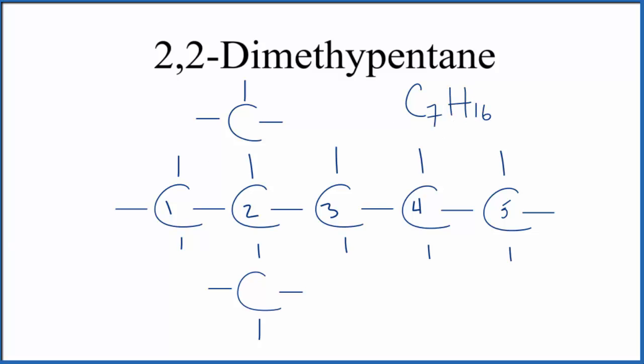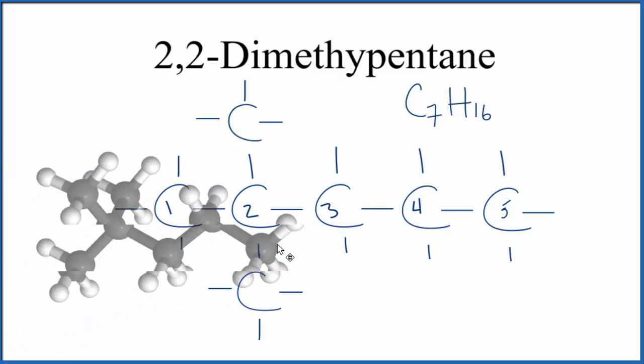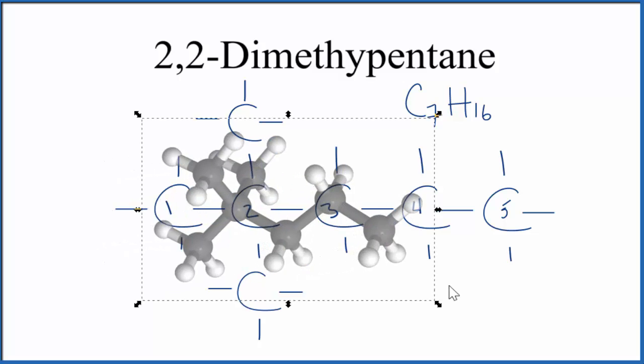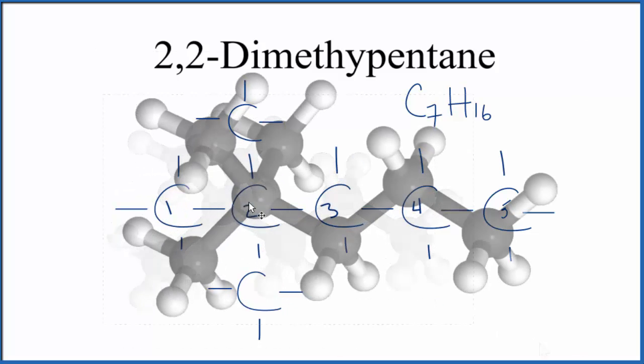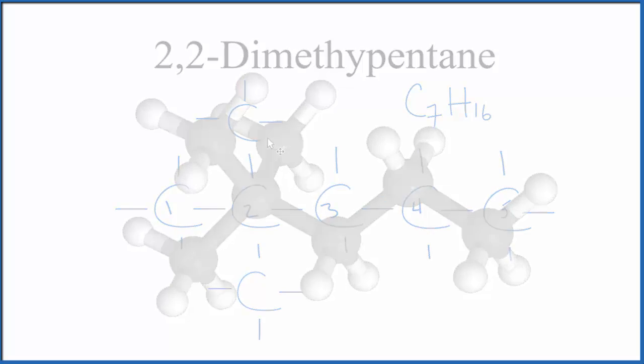If we wanted to look at this in three dimensions, we could do that. You can see the second carbon here has two methyl groups on it. This is Dr. B with the structural formula for 2,2-dimethylpentane. Thanks for watching.